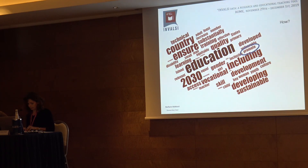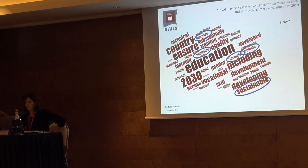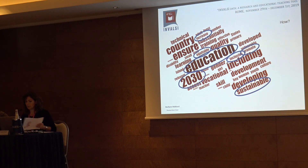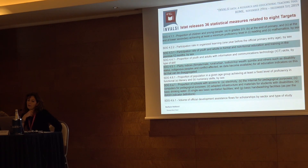How can we achieve these goals? By promoting access to the education system and improving students' skills in an equitable, inclusive, and sustainable way. We aim to achieve this by 2030. In our database we have 36 statistical measures related to eight targets of Goal 4.